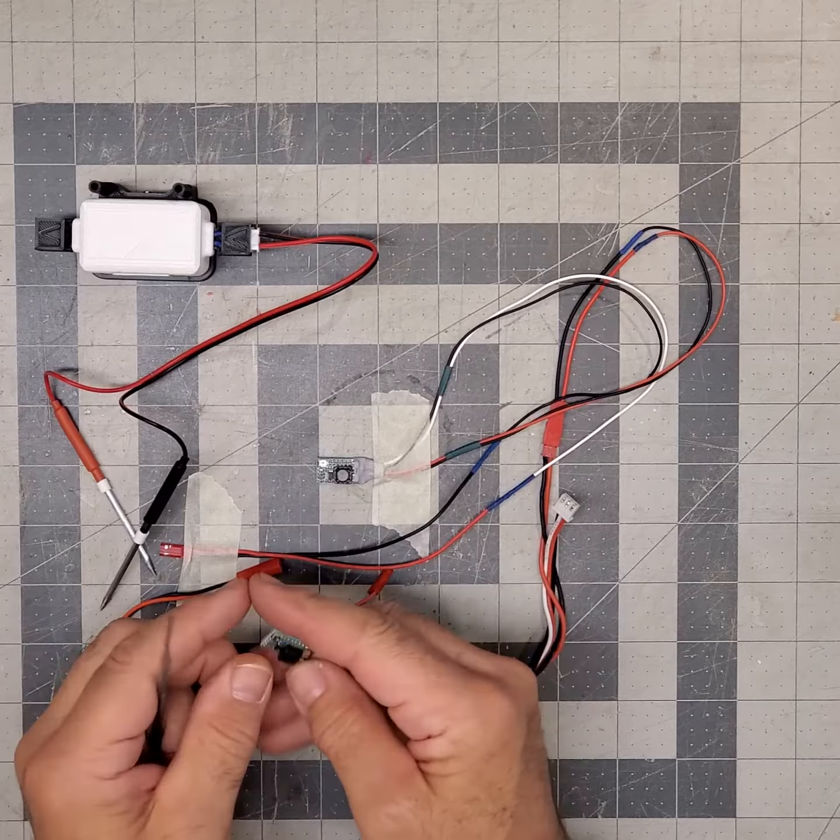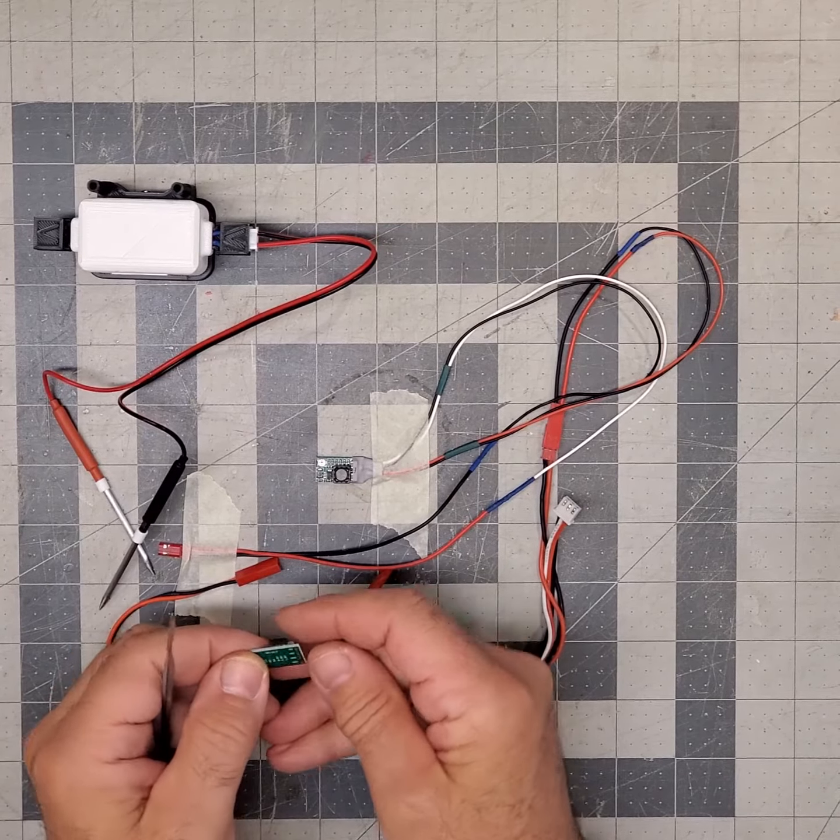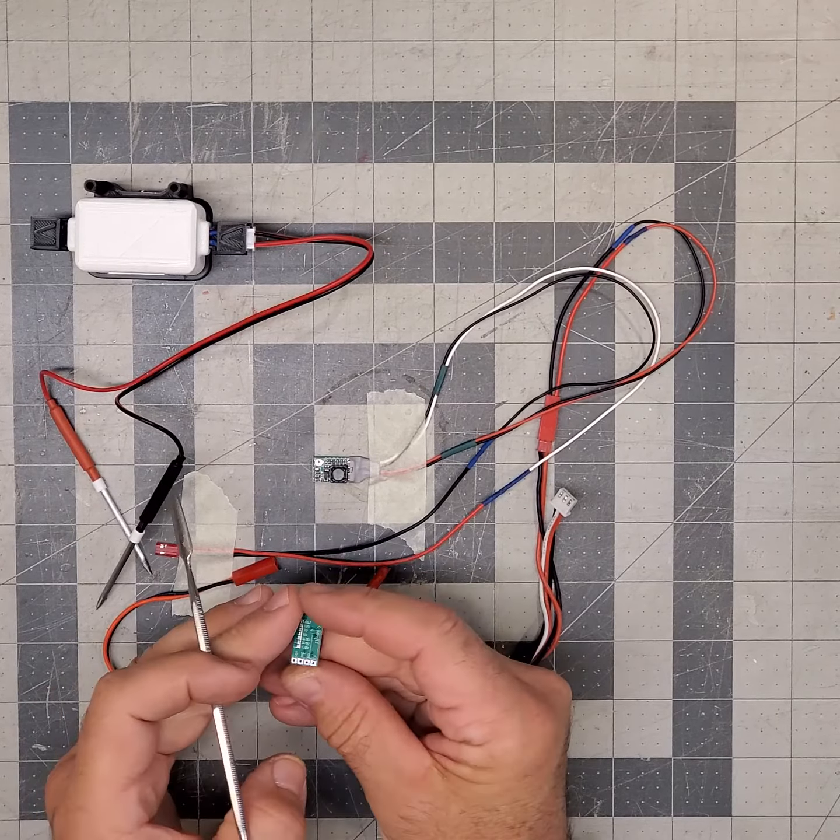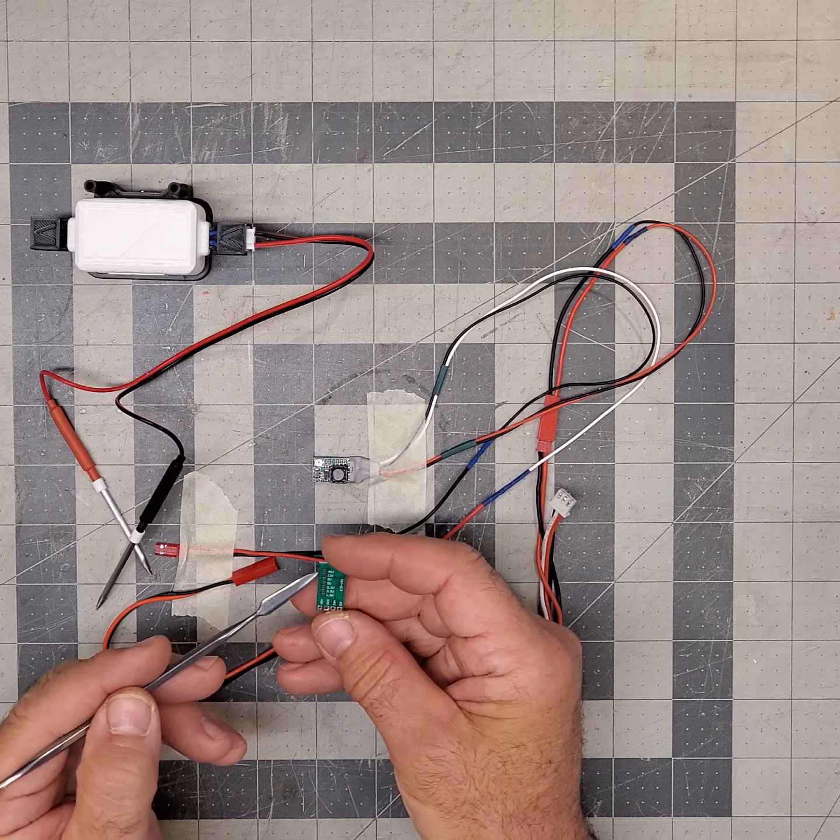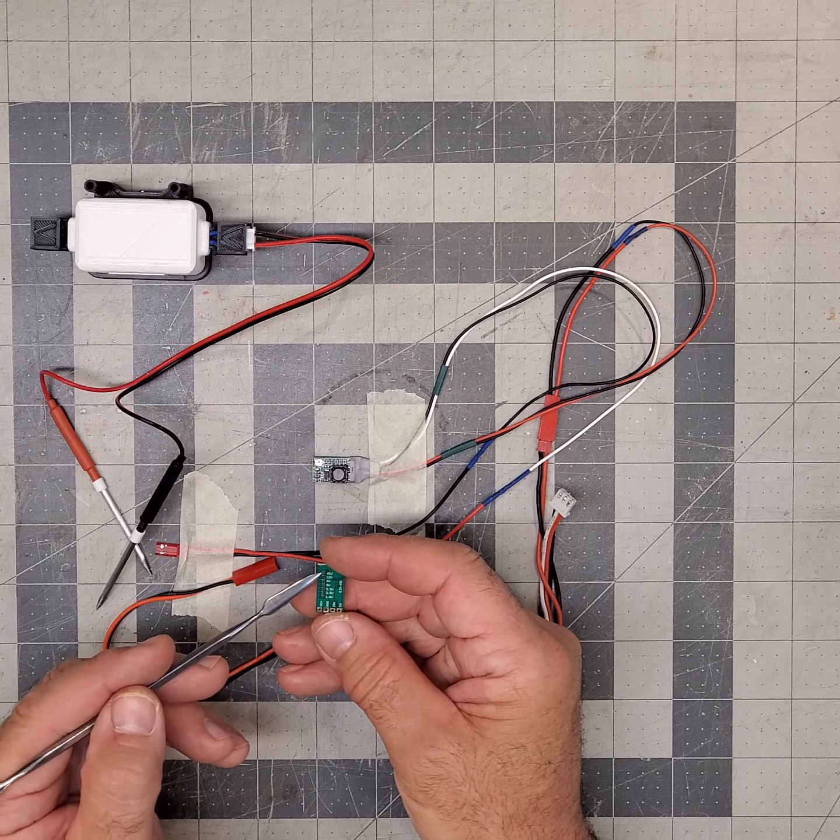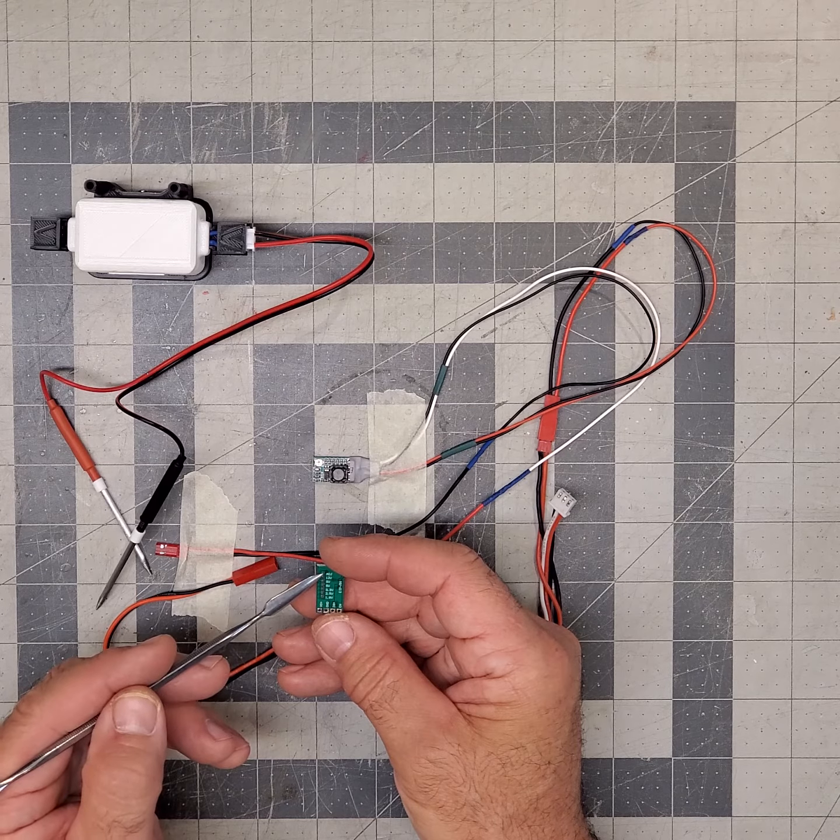This little guy right here, the one on Amazon, you can get like seven of them. You've seen them before, I'm sure. They're called a mini DCC something. And they have this adjustable, it's already set to adjustment, so you don't have to solder this.